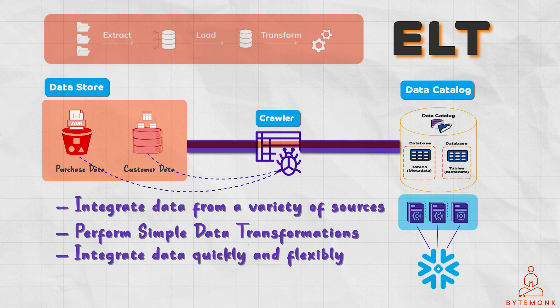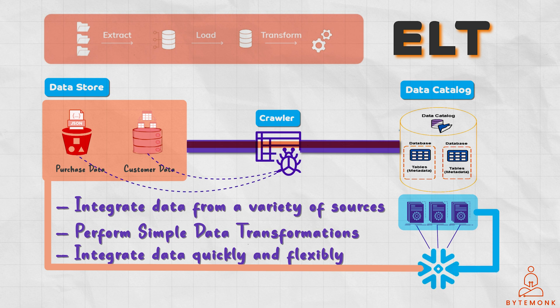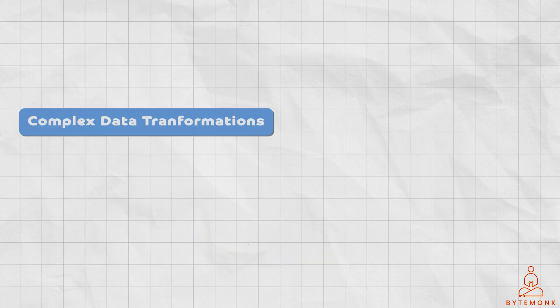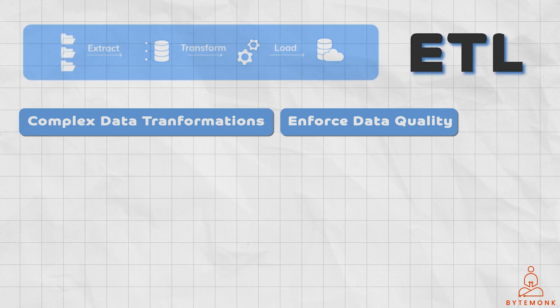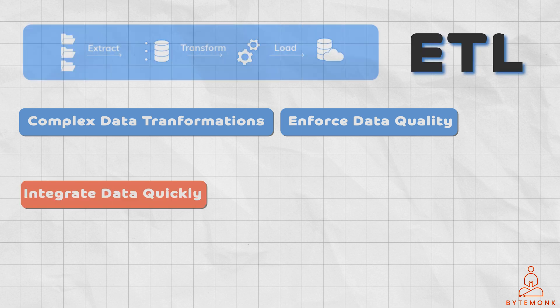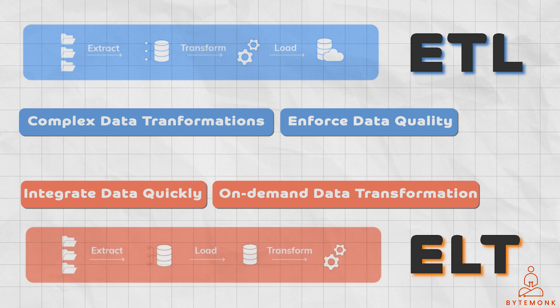In ELT mode, AWS Glue extracts data from source systems and loads it directly into target systems such as Amazon S3 or Amazon Redshift. The data can then be transformed on demand within the target system using SQL or Apache Spark. The best way to decide which mode to use is to consider the specific requirements of your data integration project. If you need to perform complex data transformations or enforce data quality and governance rules, then ETL mode is a good choice. If you need to integrate data quickly and flexibly, or if you are using a cloud data warehouse or data lake that supports on-demand data transformation, then ELT mode is a good choice.